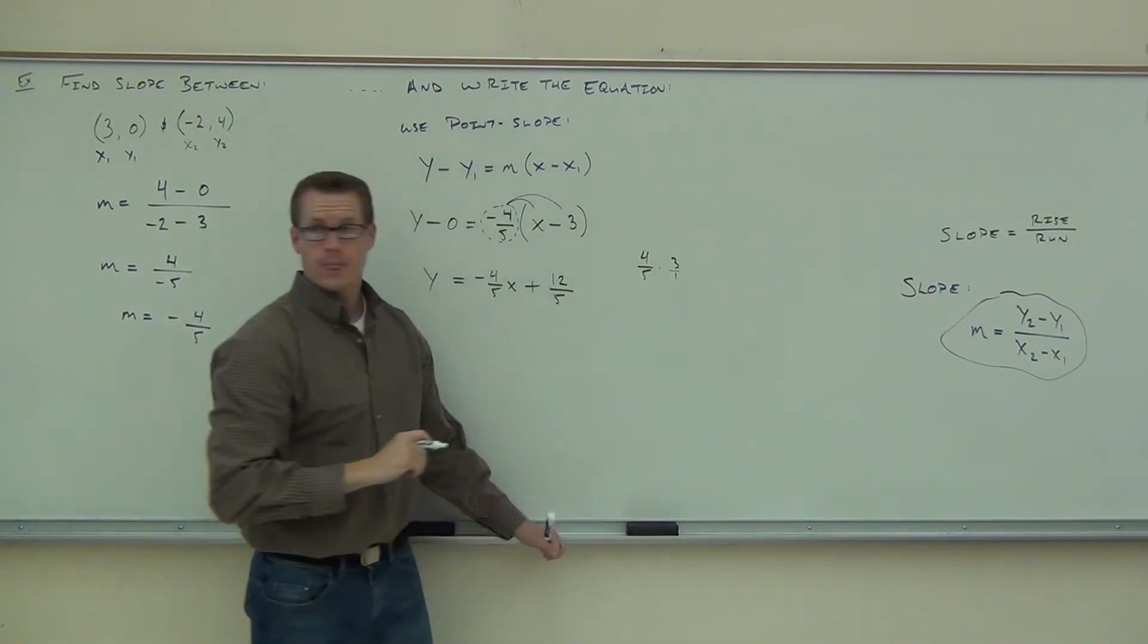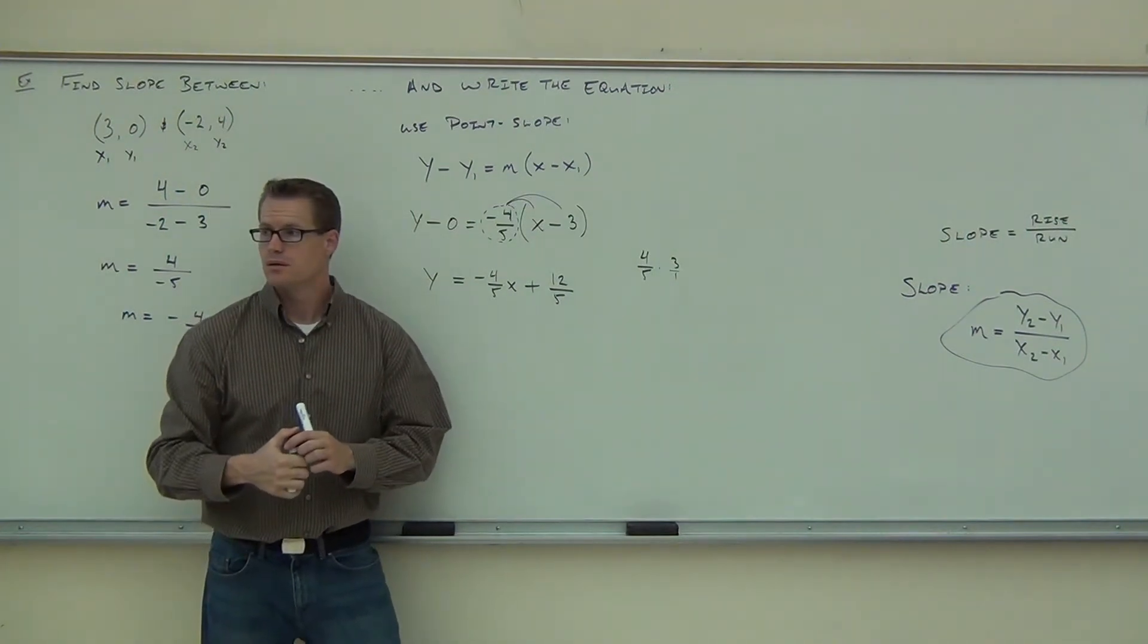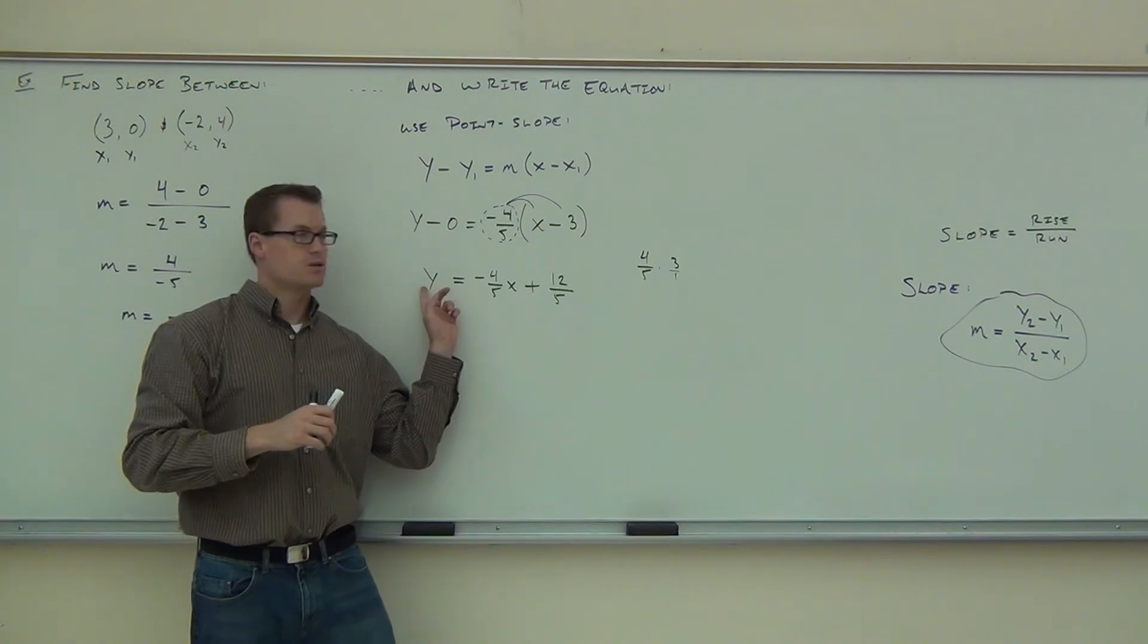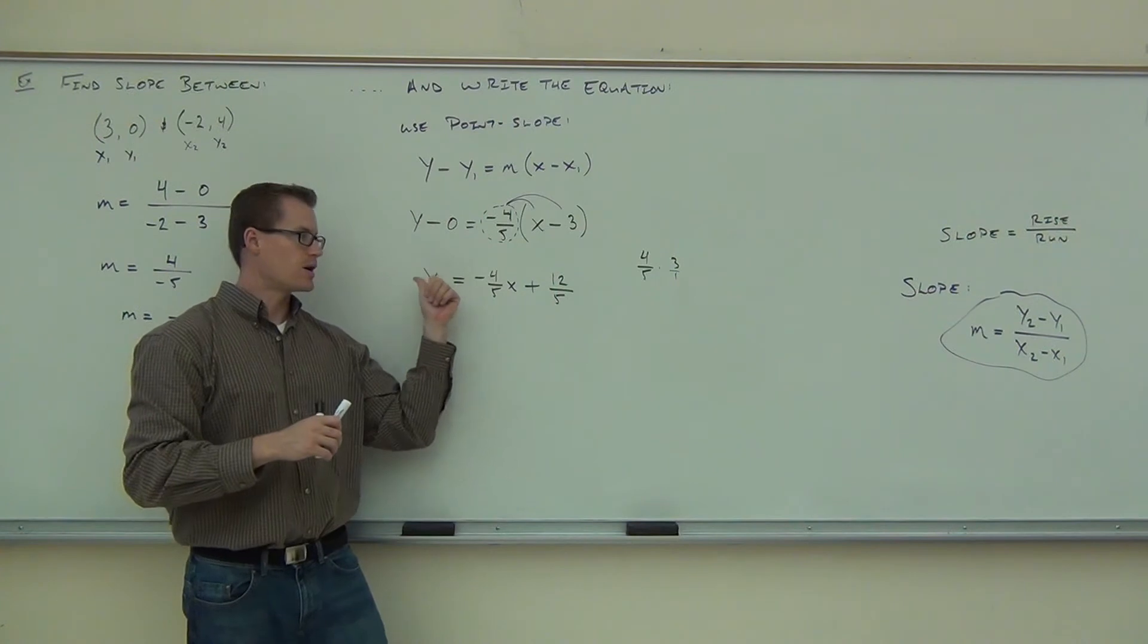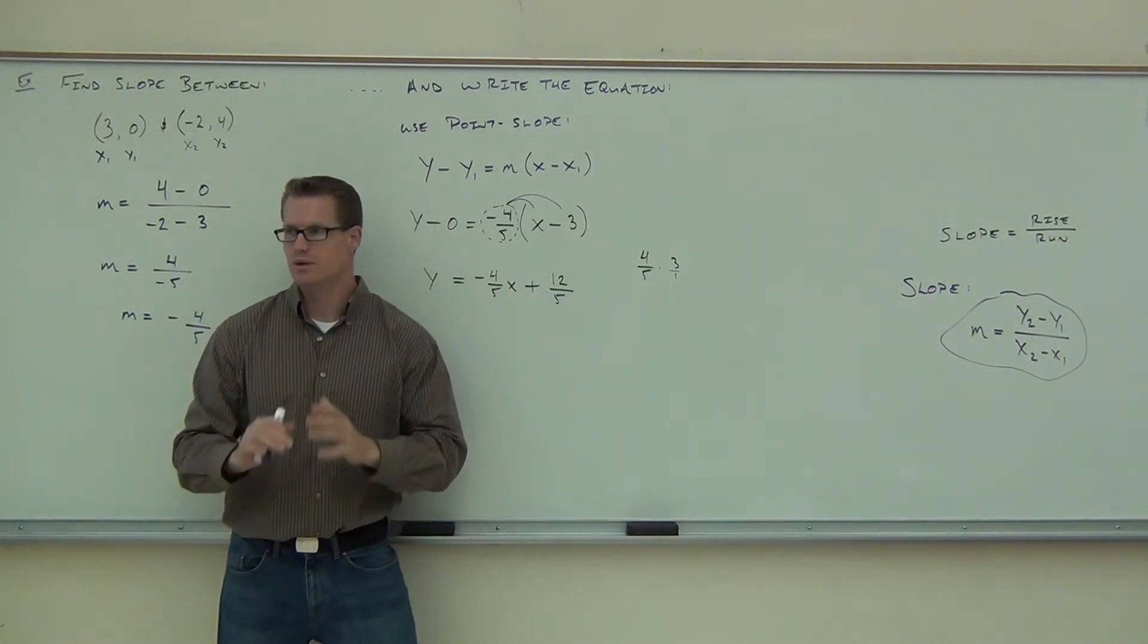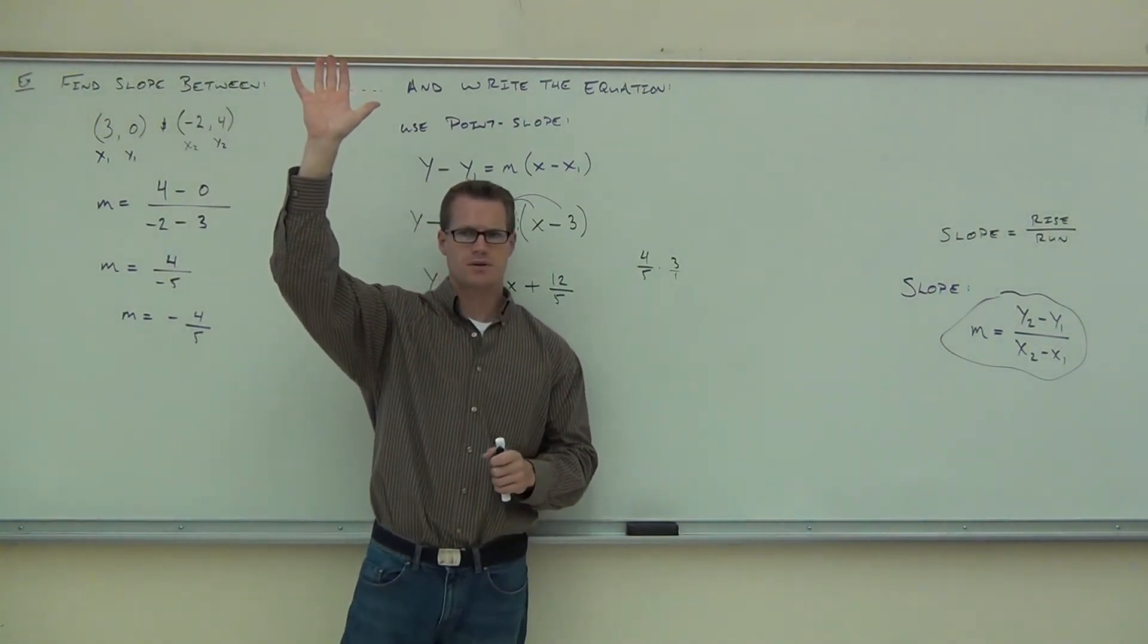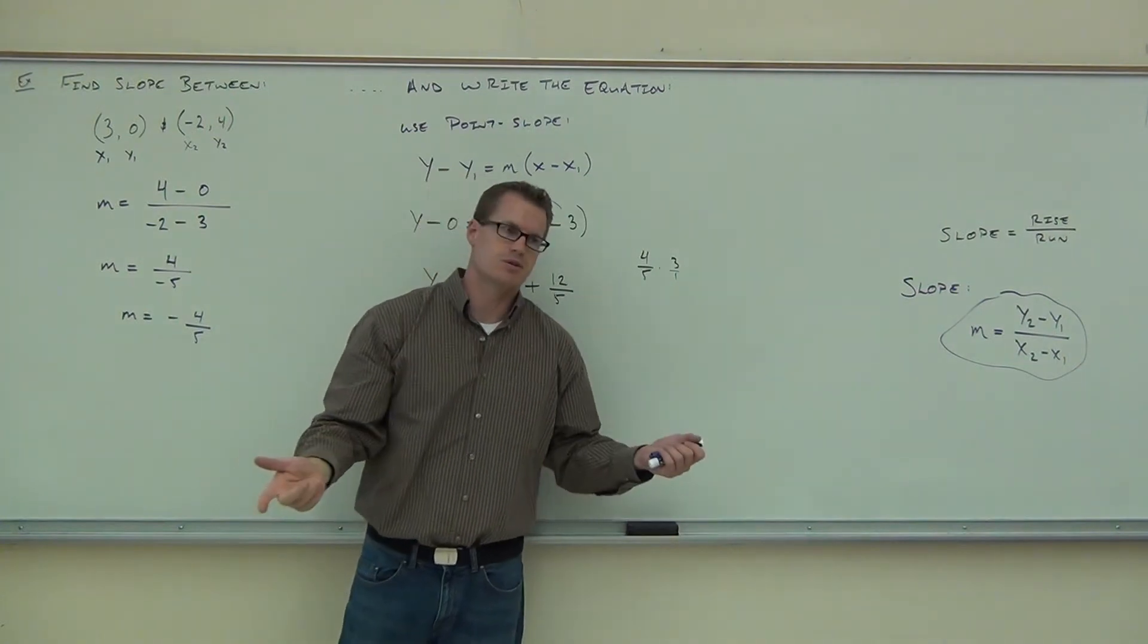Could we factor out a fraction before? Like just times everything by five? You could, but you're going to end up with this same thing anyway because you'd have a five-y over here. Remember, when you multiply by five, you do this side and this side. So you're going to have that five-y. You'll end up dividing by it anyway. Either way, you're going to have this fraction. There's no way to really get rid of this one. That's a good question. Good idea, though. Get used to those fractions because you will get them doing your slope and your y-intercept.